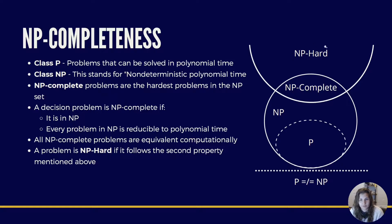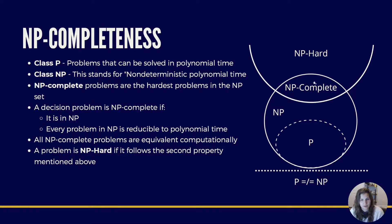A problem is NP hard if it follows only the second property — that every problem in NP is reducible to polynomial time. And the NP complete set is a subset of NP hard. You can also see that P is a subset of NP, which means any problem that can be solved by deterministic machines in polynomial time can also be solved by non-deterministic machines in polynomial time.